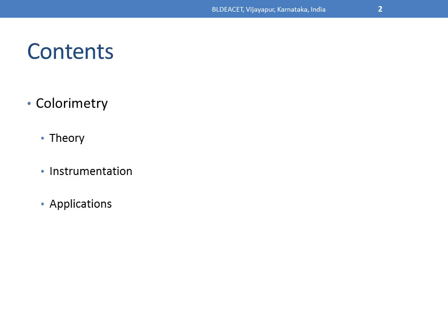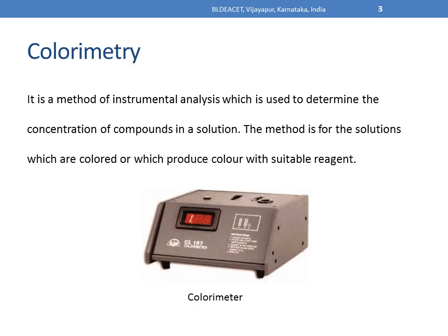In this presentation we will talk about what colorimetry is, what is its theory or principle, what is the instrumentation, how it works, and then we will see some of the applications where the colorimetry method can be employed. Colorimetry is one of the methods of instrumental analysis which is used to determine the concentration of compounds present in an unknown solution by using an instrument called a colorimeter. It is applicable to solutions which are colored by themselves or which produce color with a suitable reagent. So basically, the colorimetry technique is employed for colored solutions.